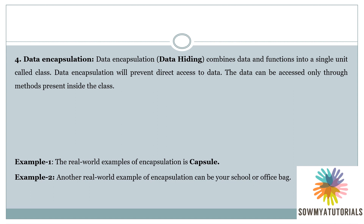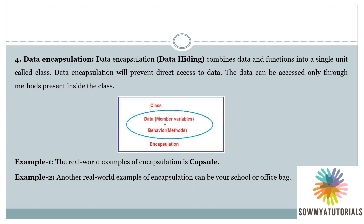Next is data encapsulation, which is also called data hiding. It is the wrapping up of data and functions into a single unit — that single unit is also called a class. It will prevent direct access to the data. The data can be accessed only through objects and methods. A class contains both data — also called member variables — and functions, also called methods, which contain the behavior of the data members. Both together represent encapsulation.